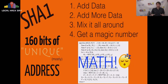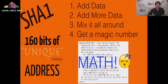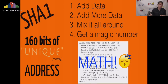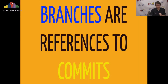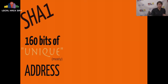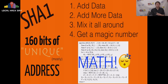The way you can think about a SHA1 is this: you add data, you add more data, you mix it all around, and you get a magic number. Essentially, you have this bucket into which you're pouring data, and when you're done pouring in data you say 'okay bucket, I'm done,' and the bucket gives you a magic number out. If you do that exact same amount of data in the exact same order the next time, you'll get the same number out. So everything in Git is a SHA1 — every Git object that you know about is a SHA1.